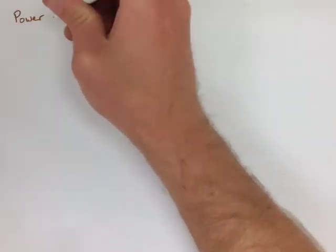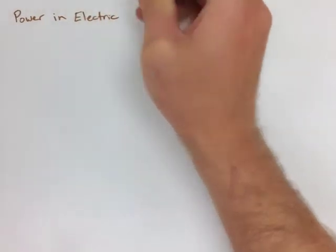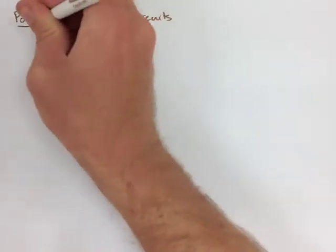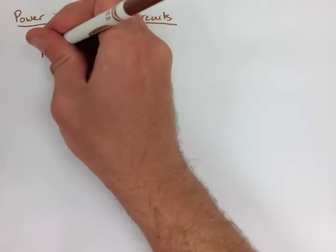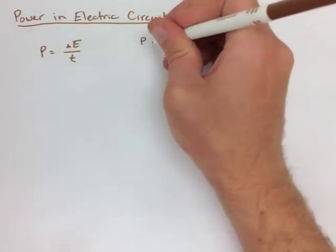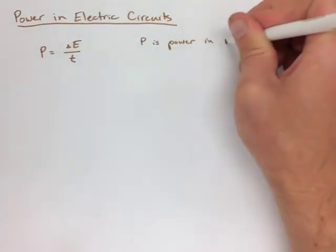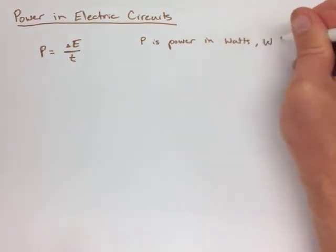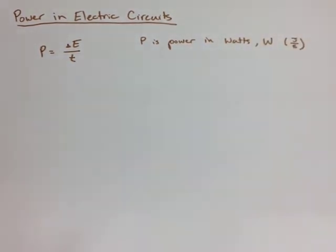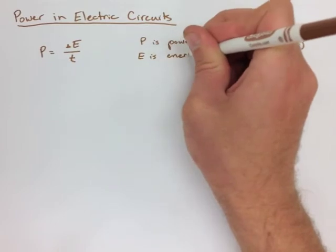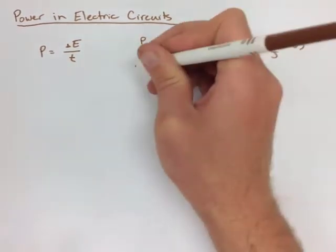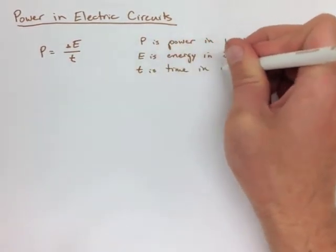When we're talking about power in circuits, there's a few equations that we have to look at. The first being that power is equal to the change in energy over time. Where power is P and it's measured in watts, or W, or 1 joule per second. E is energy, and it's measured in joules, and T is time, and it's measured in seconds.